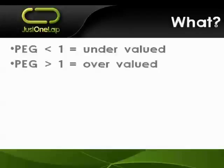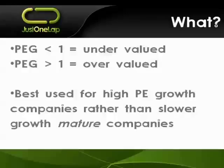A number greater than 1 would suggest a share is overvalued. So it's a nice simple metric — those numbers typically float between about 0.5 and 1.5 or 2 times. We get a nice line in the sand: below 1 is offering value, above 1 is expensive. As I said, it's typically best used for high growth companies rather than your more mature ones — companies that are still in their ramp-up stage.